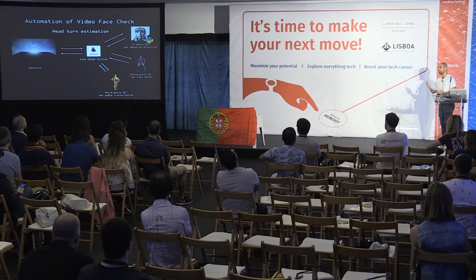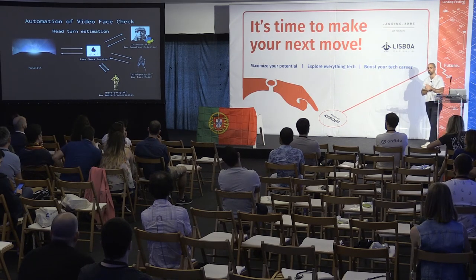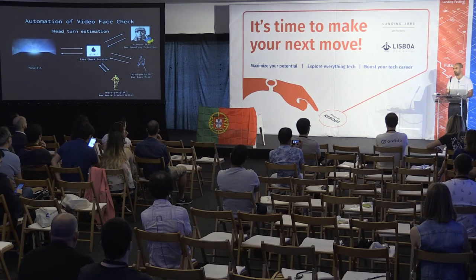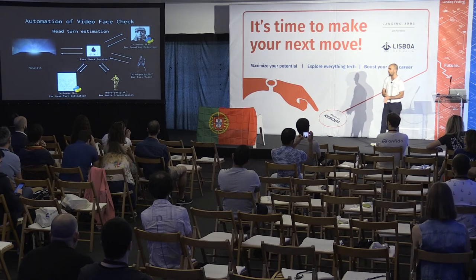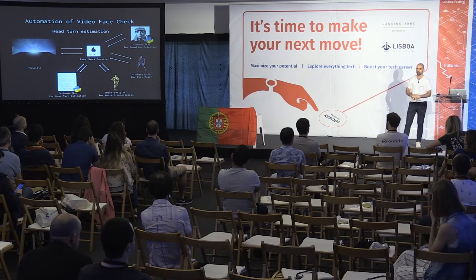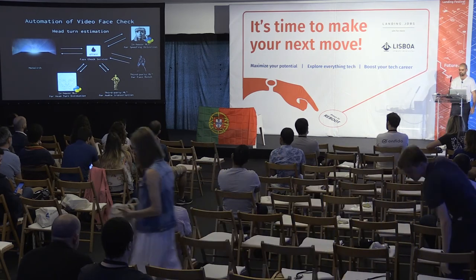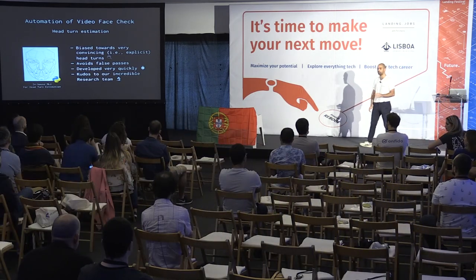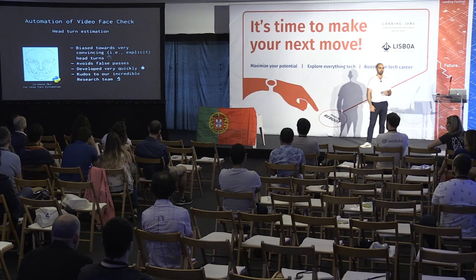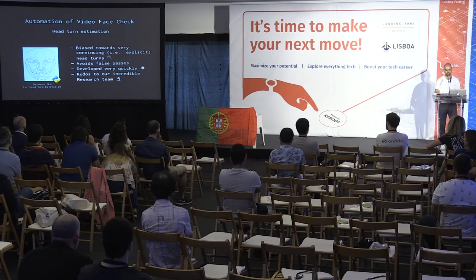We also needed to automate the head turn challenge. We introduced a head turn estimation microservice, also written in Python. This allowed us to automate the process of understanding if the person had completed our movement challenge correctly. It was wired toward requiring very convincing turns to avoid false passes, and it was developed very quickly by our research team.